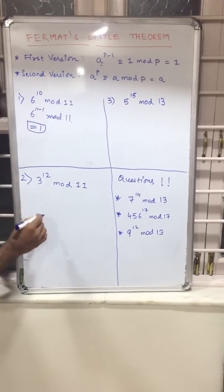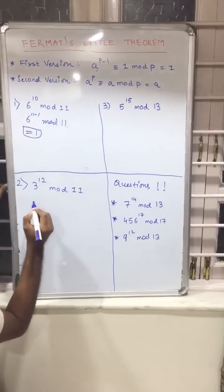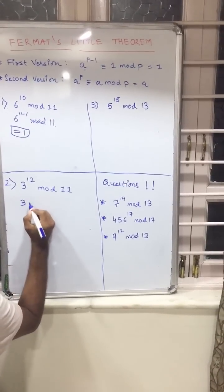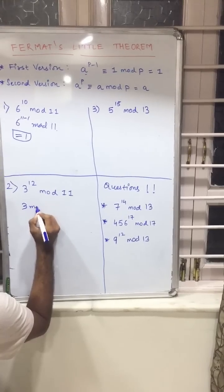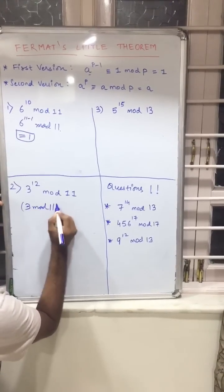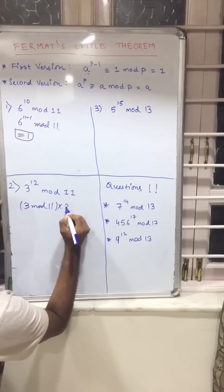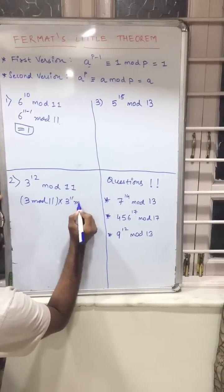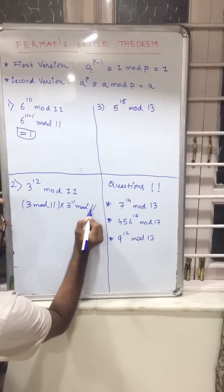So for 3 raised to 12 we can write it as 3 mod 11 multiplied by 3 raised to 11 mod 11.